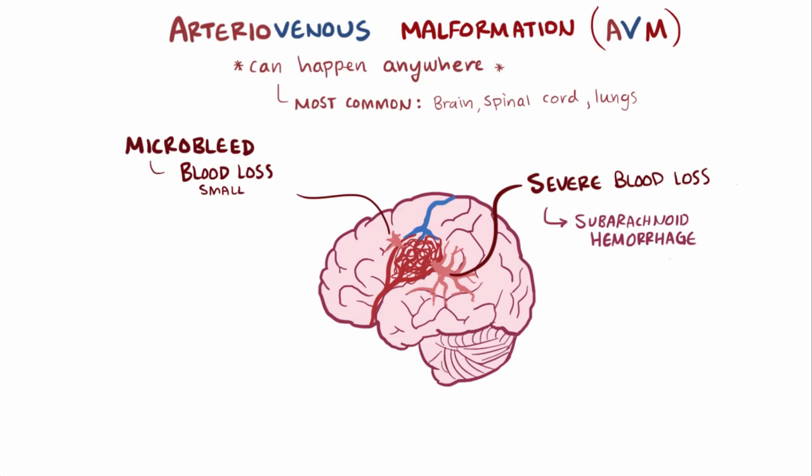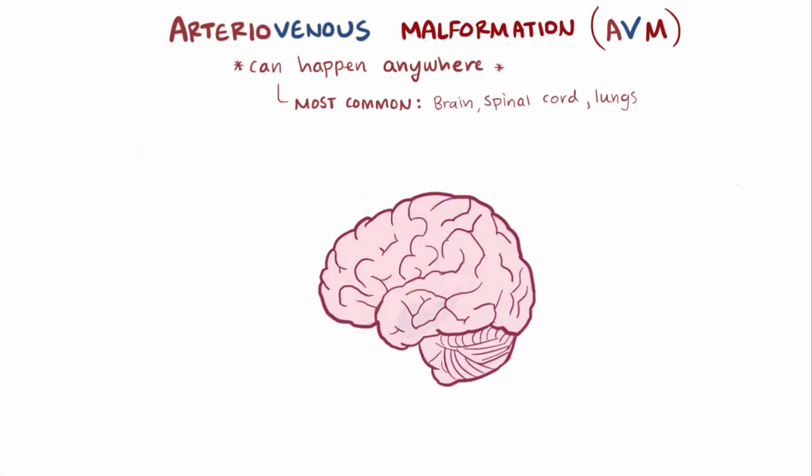Depending on the location, this can cause several neurological complications like headaches or seizures, as well as other neurological symptoms that can relate to the part of the brain affected. For example, if it affects the hippocampus, it might affect the person's memory, or if it's the basal ganglia, it might affect their ability to move.